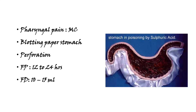The most common presenting symptom of sulfuric acid poisoning is pharyngeal pain. It causes a blotting-paper-like appearance of the stomach, as seen in the image, and mainly causes stomach perforation. The fatal period is 12 to 24 hours, and the fatal dose is 10 to 15 ml. Important points to remember: oil of vitriol, black tongue and chalky white teeth, blotting-paper stomach, and fatal dose 10 to 15 ml.